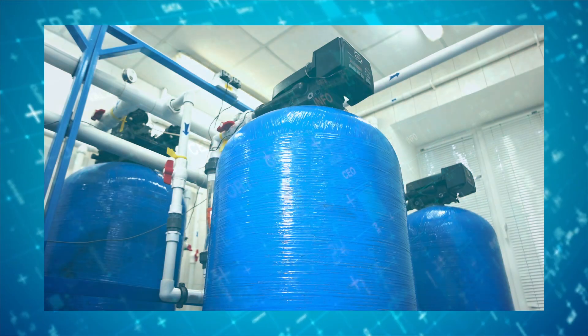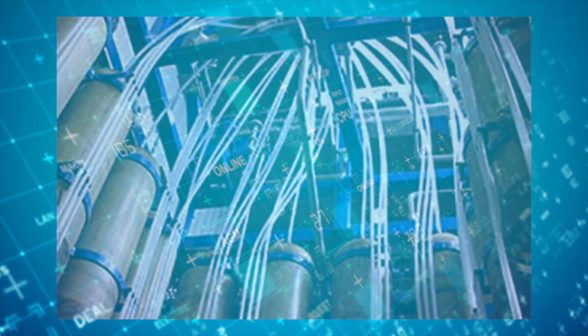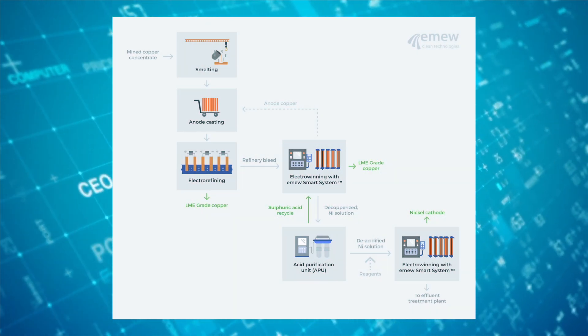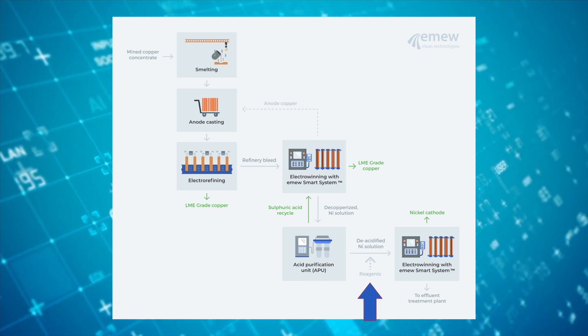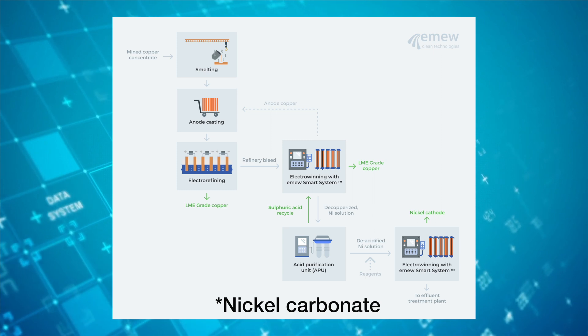So is there a better way to treat the decopperized solution to create more value? Many copper refineries that are embracing zero discharge are abandoning evaporation and crystallization, electing instead for an acid purification unit to treat the decopperized nickel solution using ion exchange to recover the sulfuric acid and produce a deacidified nickel solution. Now that the sulfuric acid has been isolated from the bleed electrolyte, the concentrated and purified acid can be recycled back to the refinery. The nickel solution is then treated with reagents to precipitate the impurities, producing a nickel sulfate solution from which nickel can be electrowon using, for example, the EMU electrowinning cell. The final result is a high purity nickel cathode that is perfectly suited for sale.